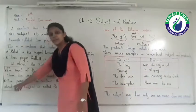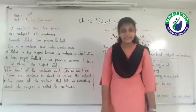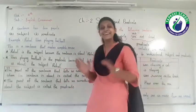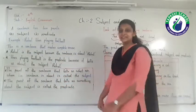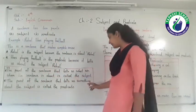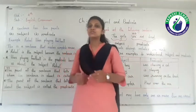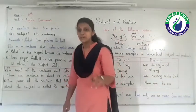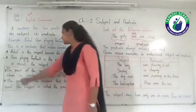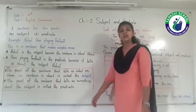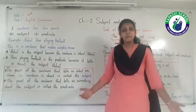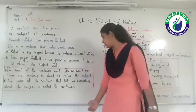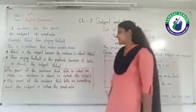Next, the definition of Predicate: the part of the sentence that tells us something about the subject is called the Predicate. Now, speak the definitions with me. 'The part of the sentence that tells us what or whom the sentence is about is called the Subject.' 'The part of the sentence that tells us something about the subject is called the Predicate.'